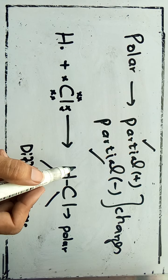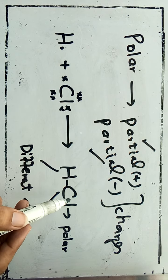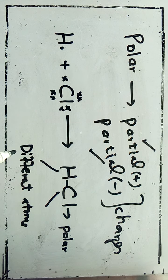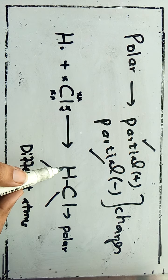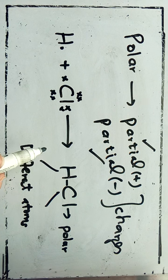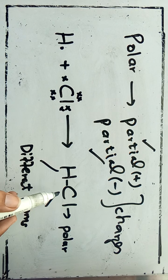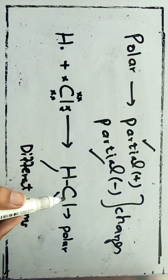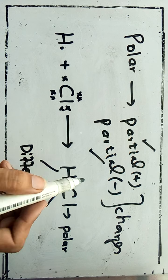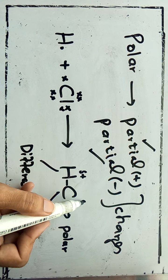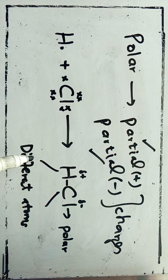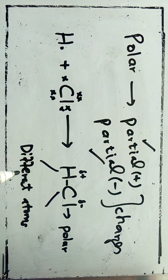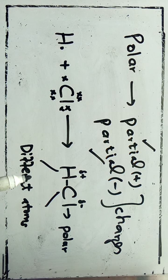One is hydrogen and the other is chlorine. Hydrogen has an electronegativity value different from that of chlorine, so partial positive and partial negative charges arise on them. In this way the bond becomes polar, and this is called the polar covalent bond.